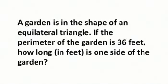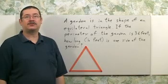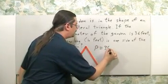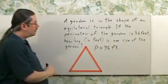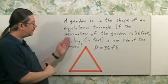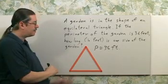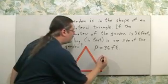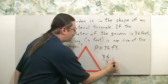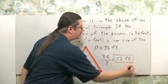A garden is in the shape of an equilateral triangle. If the perimeter of the garden is 36 feet, how long in feet is one side of the garden? An equilateral triangle has three equal sides. The perimeter is the sum of all side lengths, so if all sides are equal and the total is 36, simply divide 36 by 3. Our answer is 12 feet.